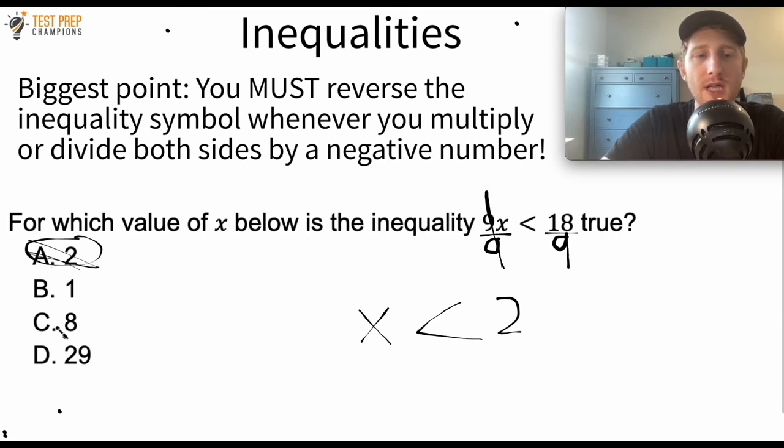All right. So C and D are also incorrect. The reason is because we know that x has to be something less than 2. Since 8 and 29 are greater than 2, we roll them out. And we know that 1 is a number less than 2. So B is the correct answer here.